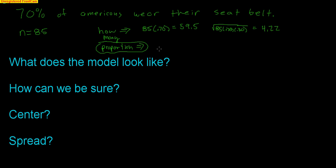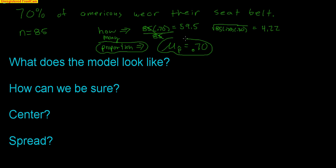We're focusing on the proportion. To find a proportion, you divide by your sample size. So if I take how many and divide by my sample size of 85, the 85s cancel. What proportion do I expect for every one of my samples? That would be 70%. Notice the notation — this is really important. Mu is the mean, the average, what we expect. The P-hat represents individual samples.